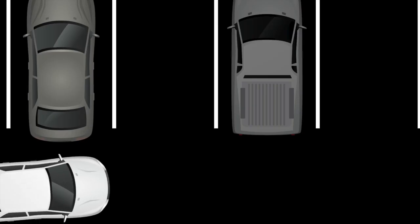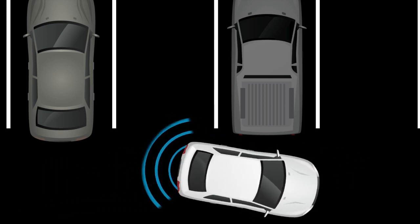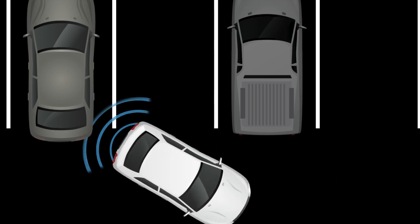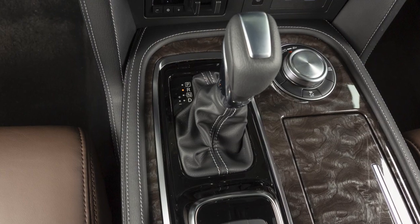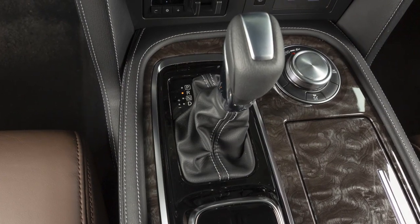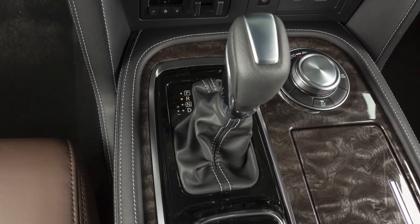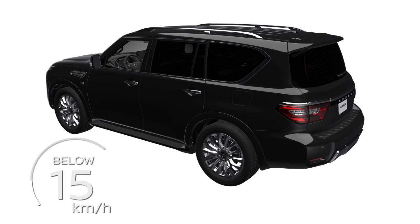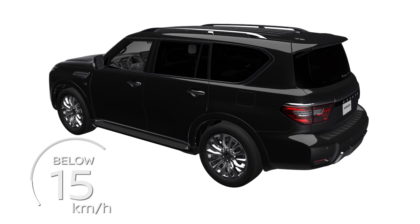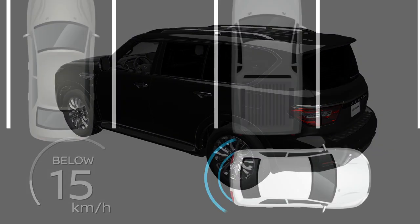The Rear Automatic Braking or RAB system can assist the driver when the vehicle is backing up. RAB operates when the shift lever is in the reverse position and the vehicle speed is less than approximately 15 km per hour.